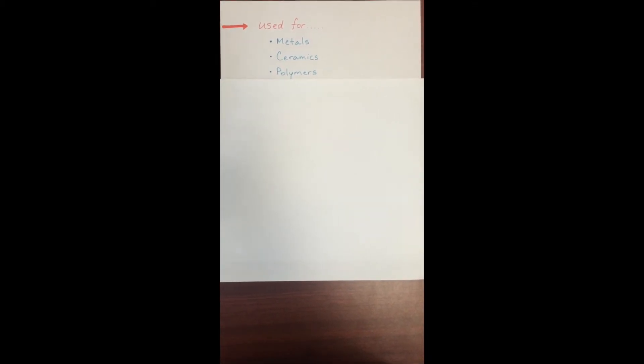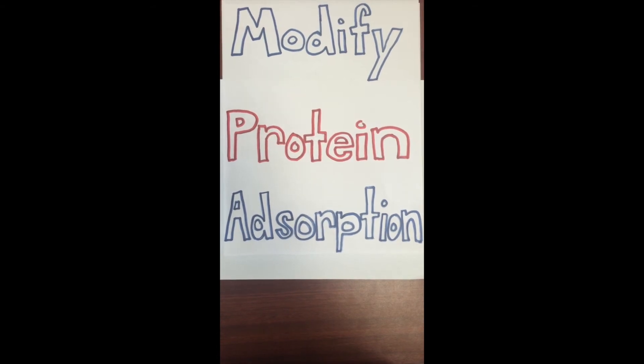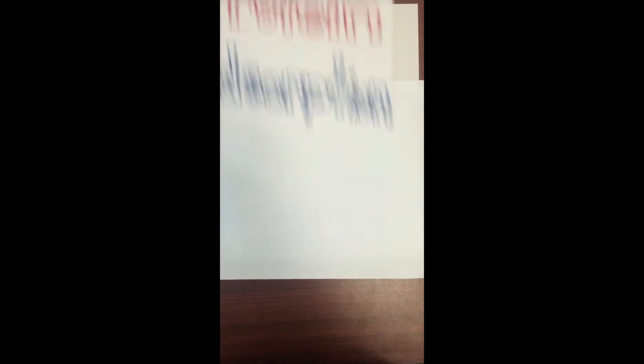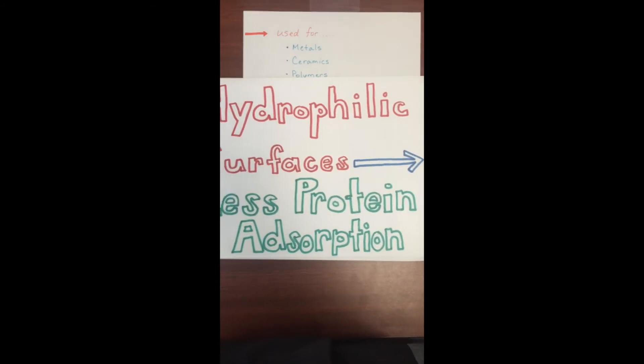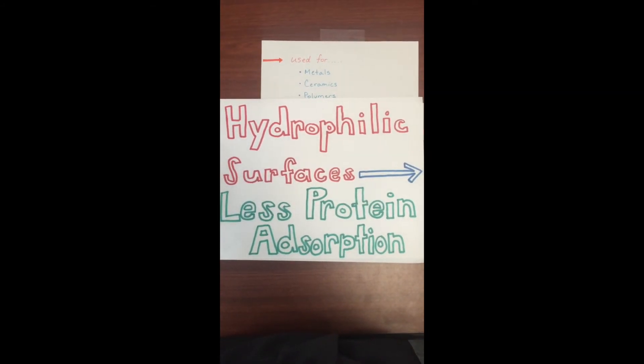When would we want to plasma treat a sample? To answer that, consider how plasma treatment can modify protein absorption. Plasma treatment can replace methyl groups with hydroxyl groups, making the surface more hydrophilic. How does a hydrophilic surface affect protein absorption?